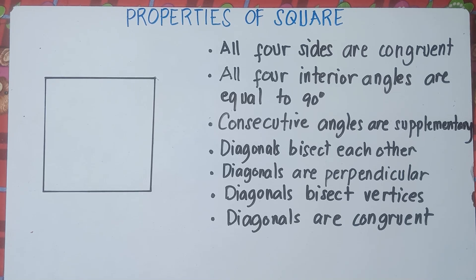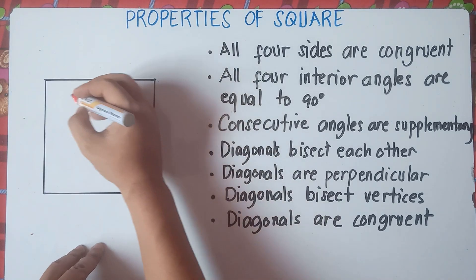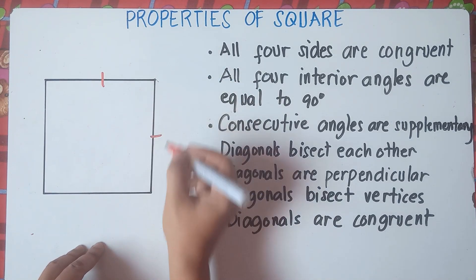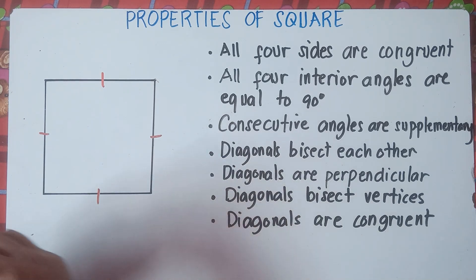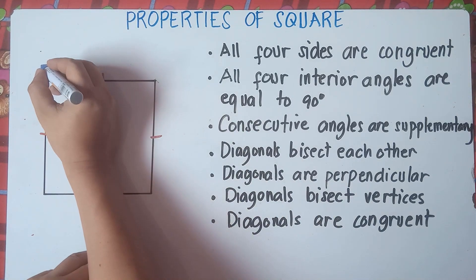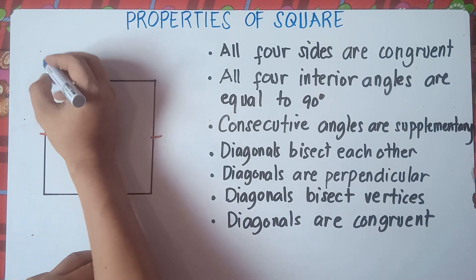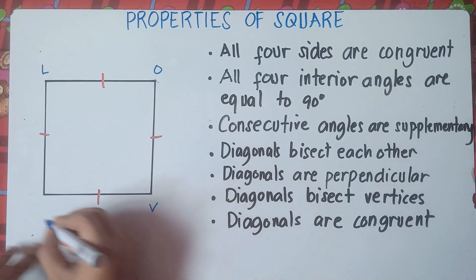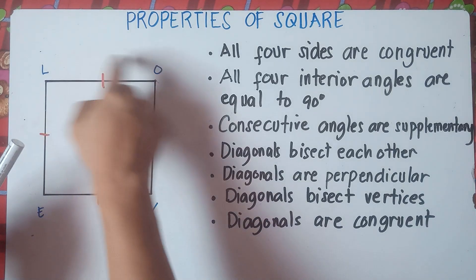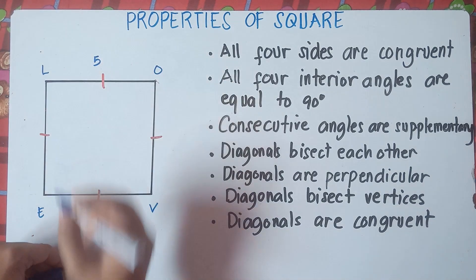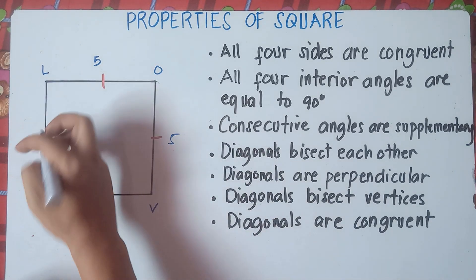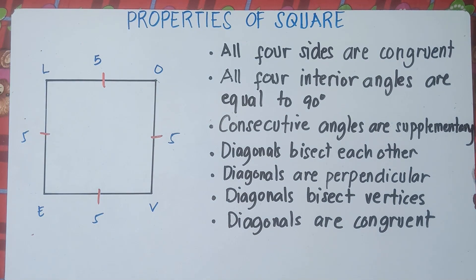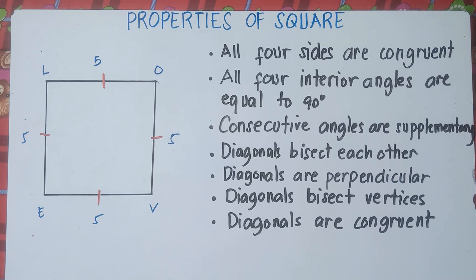The first property of a square: all four sides are congruent, which means all sides are equal. So if we have a square named LOVE, and LO is 5, then OV must also be 5, EV is also 5, and LE is also 5 — because all four sides are congruent, according to the first property of a square.